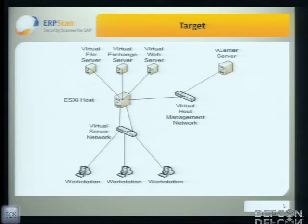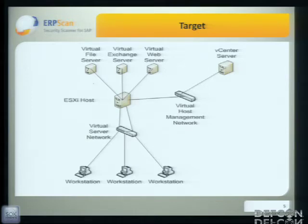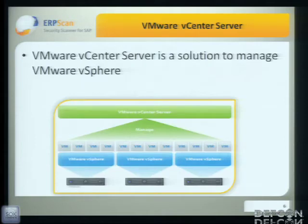One day we had a big network, and all infrastructure was built on VMware — ESXi hosts and vSphere. All seemed pretty secure, all patched with the latest updates. There was no default password or anything stupid. So we decided to try to attack the vCenter server, because vCenter is the solution to manage vSphere. If we can hack vCenter, we can hack all VMs and all infrastructure.